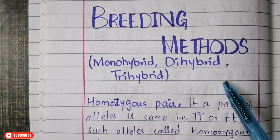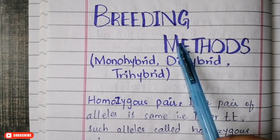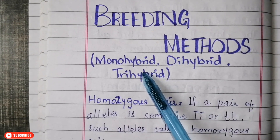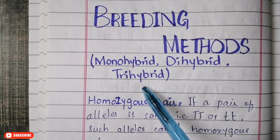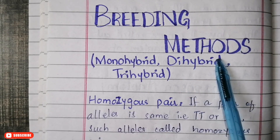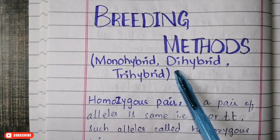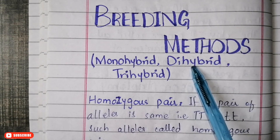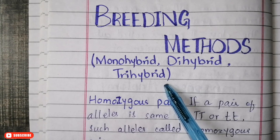Welcome back to another exciting episode of Inside Learning. Today we are going to discuss monohybrid cross, dihybrid cross, and trihybrid cross. These crosses are methods of breeding among cells. In this video we will look at what is monohybrid cross and dihybrid cross, and we will discuss the trihybrid cross in our coming video.